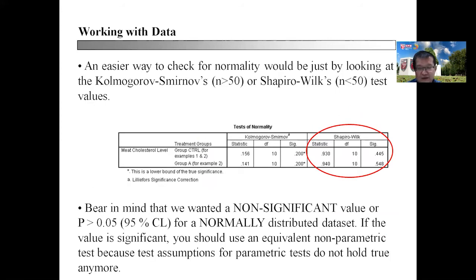As indicated earlier, the Kolmogorov-Smirnov and Shapiro-Wilk will be the best way to determine. We need a non-significant value, as I indicated earlier, for you to have an inkling that the data is normally distributed.